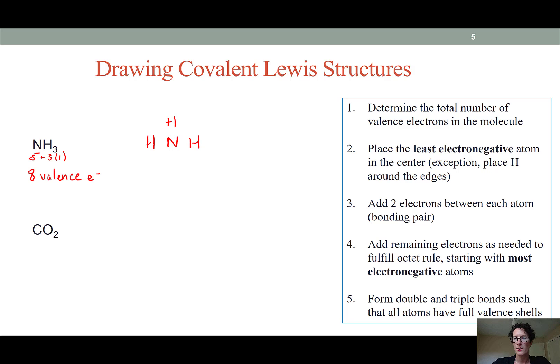The next step is to add two electrons between each atom to indicate a bonding pair. So two here, two here, two here. Notice that I've now used up six of my available valence electrons in my bonds, so I have minus six bonding electrons. That means I have two electrons left over.